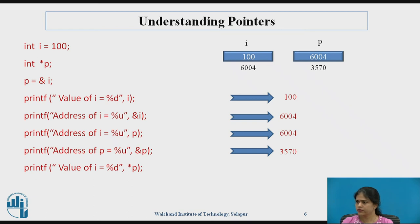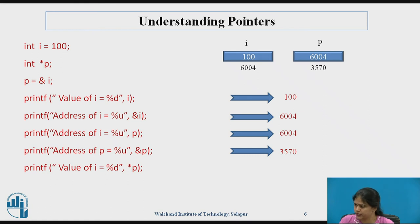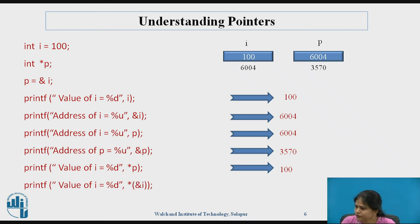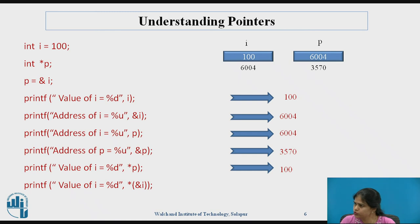If I want to print the value of i using pointer variable p, I use format specifier %d and write: printf("%d", *p). Star p means value at p, i.e., value at address 6004, which is 100 — so it prints 100. One more interesting statement: printf("%d", *(& i)). Inside the bracket, &i means address of i, which is 6004. Applying star to 6004 gives value at 6004, which is again 100. So this also prints 100.